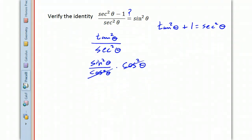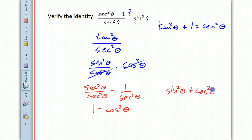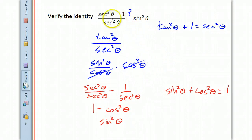So that's one way to do it. There's another way. We could take this left side and split it up — write secant squared theta over secant squared theta minus 1 over secant squared theta, which gives us 1 minus cosine squared theta. And by the Pythagorean identity that says sine squared theta plus cosine squared theta equals 1, we get that 1 minus cosine squared theta equals sine squared theta. Either way, we're going to get that this left side eventually equals sine squared theta.